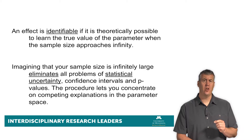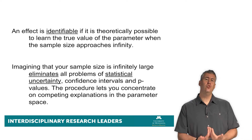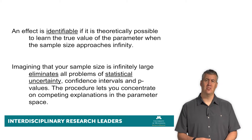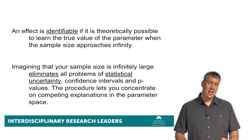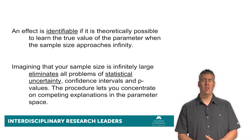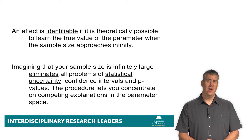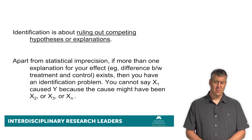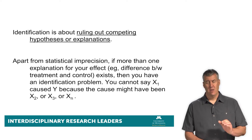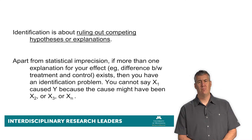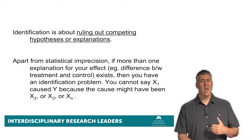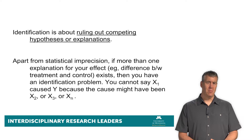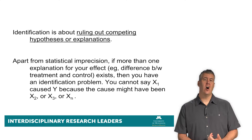The key idea with effect identification is assuming infinite sample size. So for all you statistical people, we can eliminate all that — the p-value literally goes to zero, if that's what you're worried about. Therefore statistical significance, which we'll talk about in a later module, plays no role in this approach. Apart from statistical imprecision or sampling variability, when we have more than one explanation for our outcome, then we say we have an unidentified effect. We can't say that some x1 caused y, if there's also explanation x2, x3, or whatever else.